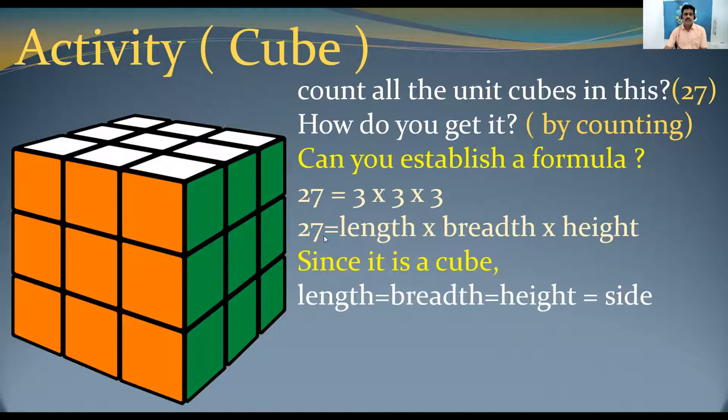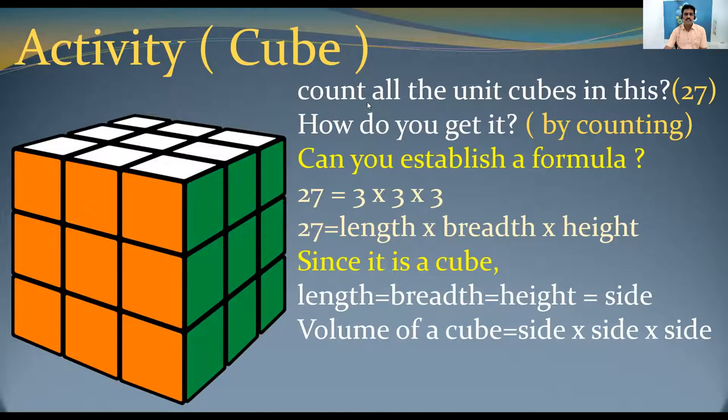So, we can say 27 is equal to volume of a cube. 27 represents volume of a cube because we counted all the unit cubes. So, this 27 represents side. Length into breadth into height. So, in place of length into breadth into height, we can take side into side into side. That means side cube. Side if you represent as a, a cube. So, volume of a cube is a cube. This is the formula for volume of a cube. Like this we can establish a formula.